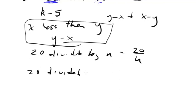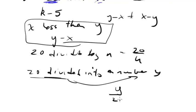20 divided into a number y, well, that's a little bit different, right? It's 20 divided into y, so this would just be y over 20.